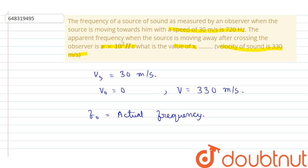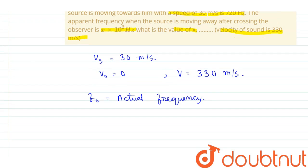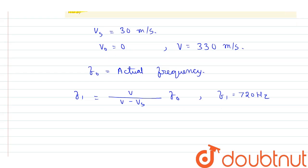Now when the source is moving towards the observer, the apparent frequency of sound is given by the relation F1 equals V divided by V minus Vs into f0. According to the equation, F1 is given as F1 equals 720 hertz. Now we can find the value of f0 from this equation.